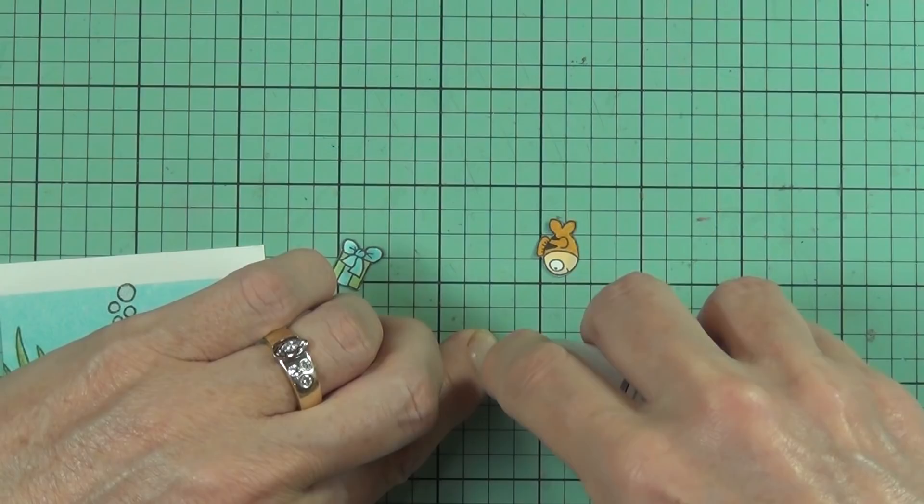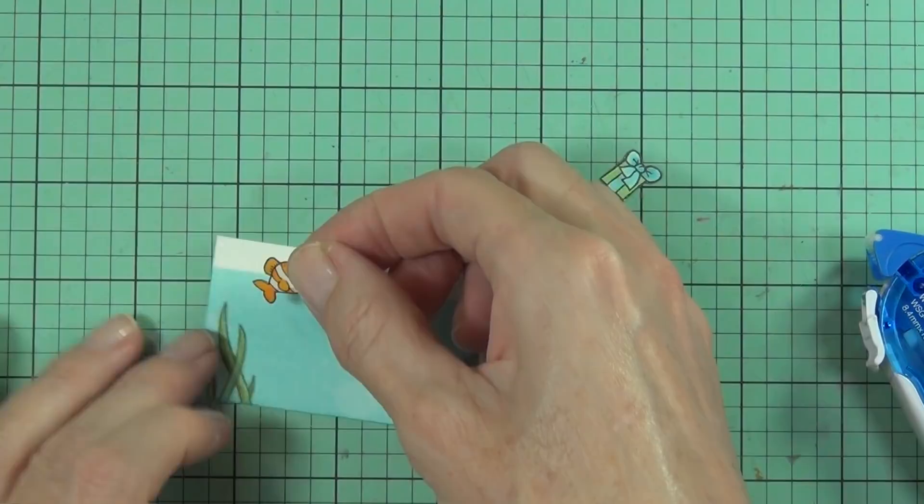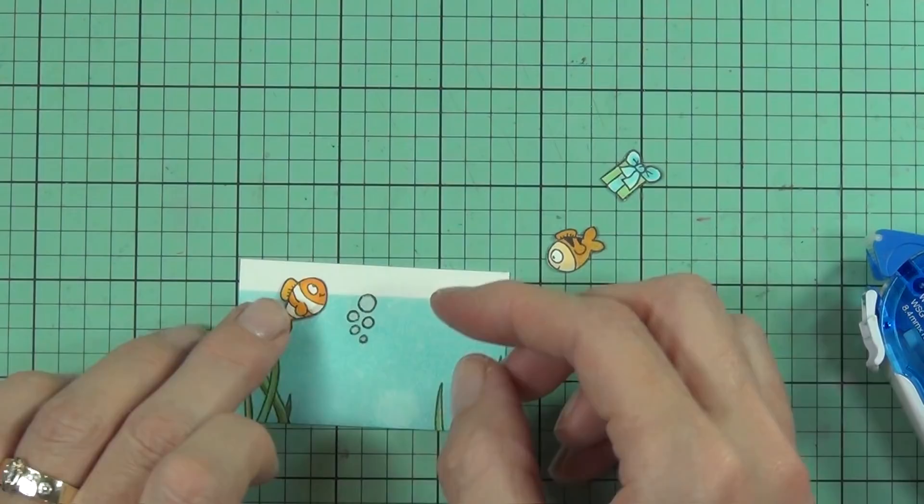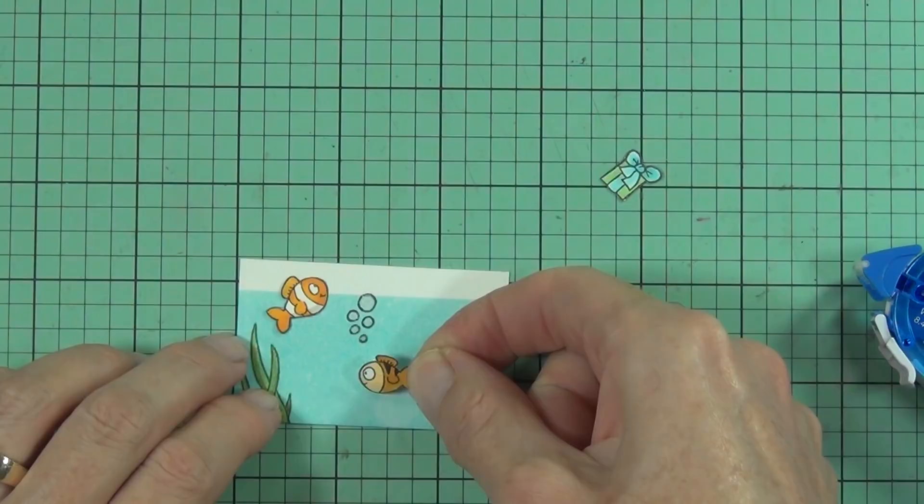This is quite forgiving, this adhesive, so you have got the opportunity to move them around a little bit if you're not quite happy with the placement of your images. I find that it sticks well though after it's sort of settled in, but initially you can actually move things around.